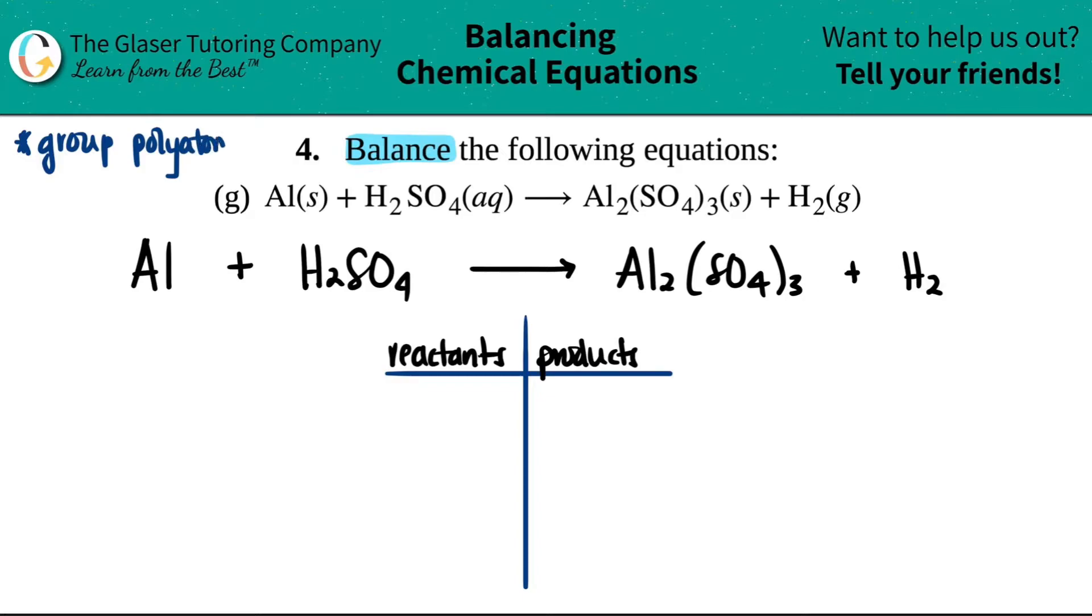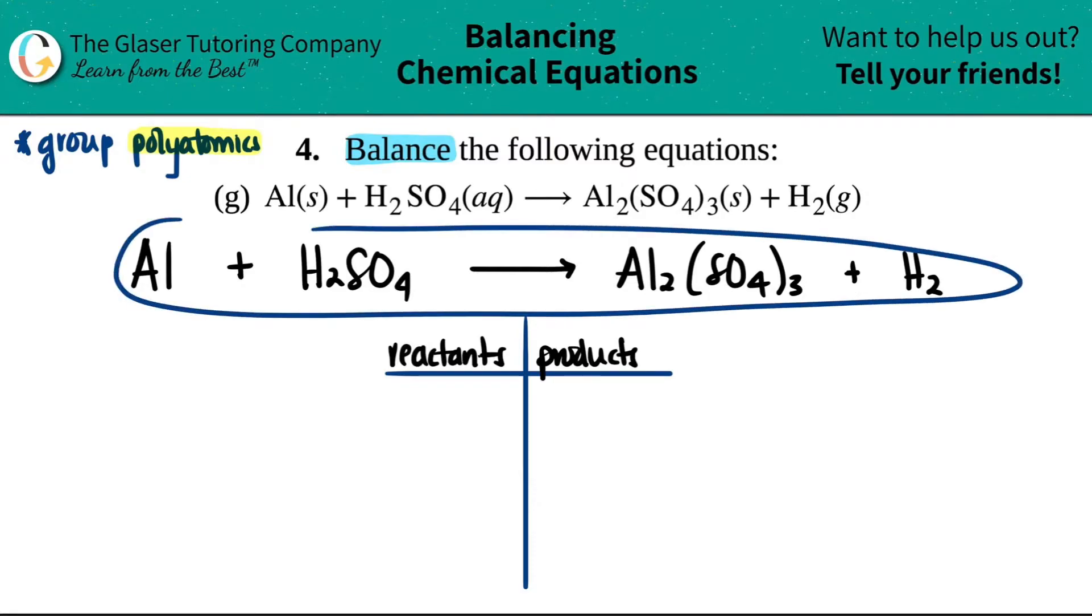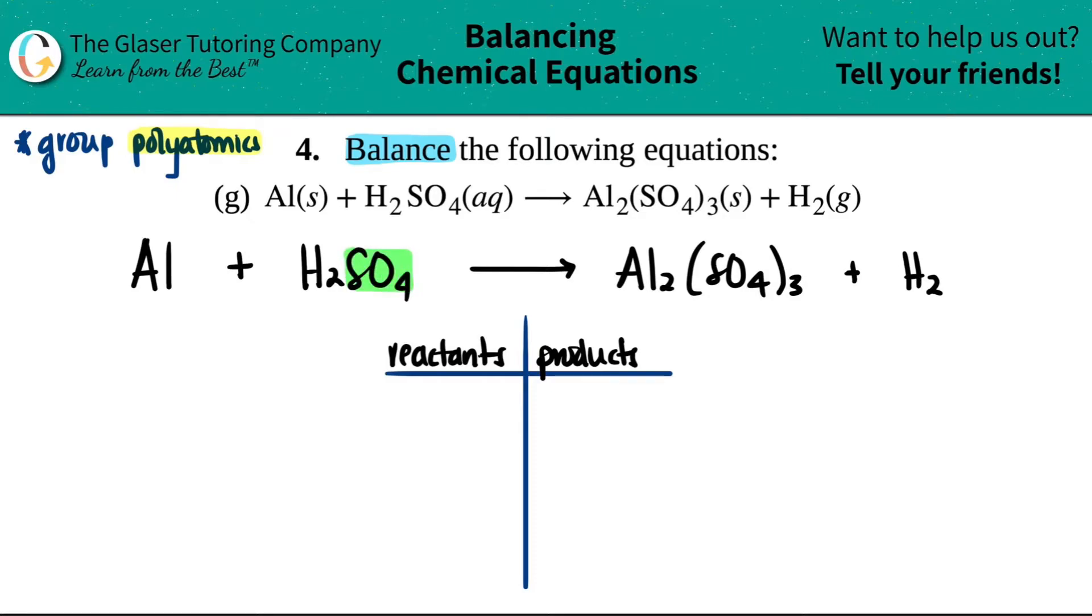But we can group individual elements, but we can also group polyatomics. So this comes from memorizing what your polyatomics are. That was like chapter two or something in your textbook. Polyatomics are like NO₃ nitrate, nitrite, phosphate. But here, if I'm scanning this, I see SO₄. That is a polyatomic. SO₄ is a sulfate, right? It has a negative two charge. So I see it on the reactant side and I see it on the product side. If you see the same polyatomic on the left and the right, you will group the polyatomic together. Don't try to separate it into sulfur and oxygen. Just try to group it as the sulfate, SO₄.